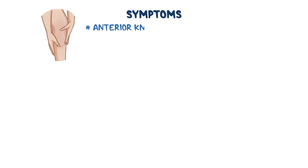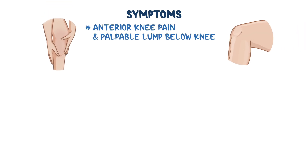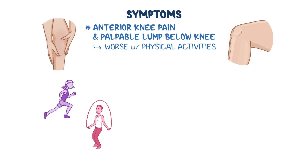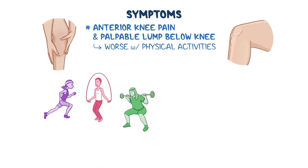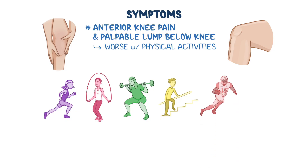Symptoms of Osgood-Schlatter disease are anterior knee pain, usually accompanied by a palpable lump just below the knee, which gets worse with physical activities like running, jumping, squatting, and especially when going up or down stairs, or when the knee gets hit by something over that spot.